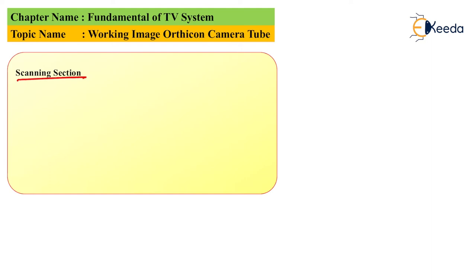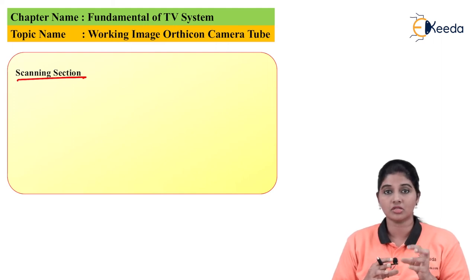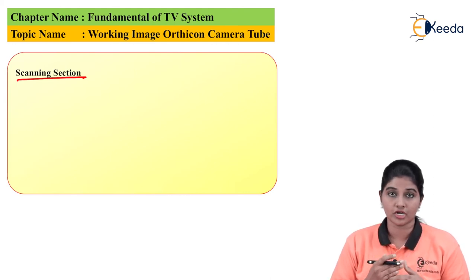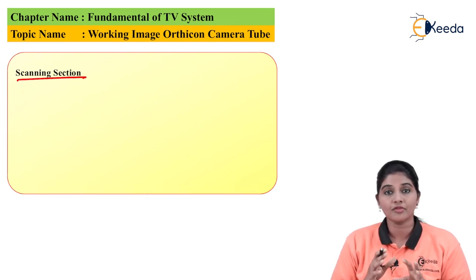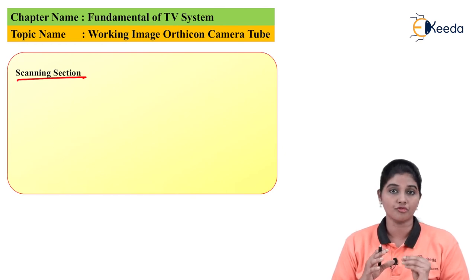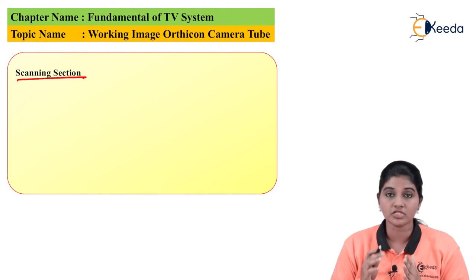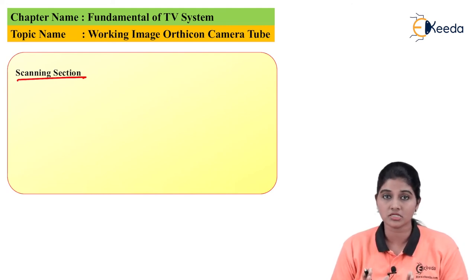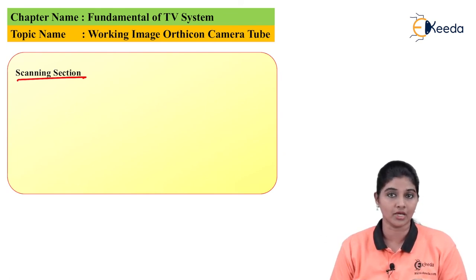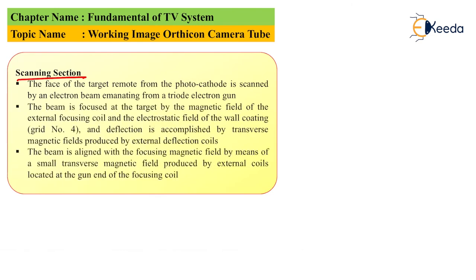Now let's move on to the scanning section, which is the middle section present between the image section and the multiplier section. The face of the target remote from the photocathode is scanned by the electron beam provided by a triode electron gun. The beam is focused at the target by the magnetic field produced by an external coil, similar to the image section.